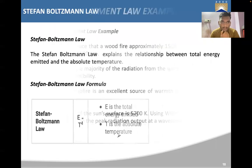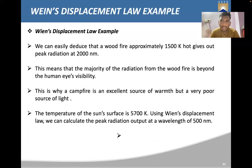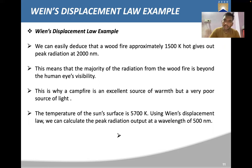As an example of Wien's Displacement Law, we can deduce that a wood fire at approximately 1500 Kelvin gives out peak radiation at 2000 nanometers, meaning the majority of the radiation is beyond human visual range. This is why a campfire is an excellent source of warmth but a very poor source of light. The temperature of the sun's surface is 5700 Kelvin, and using Wien's Displacement Law we can calculate the peak radiation output at a wavelength of about 500 nanometers.